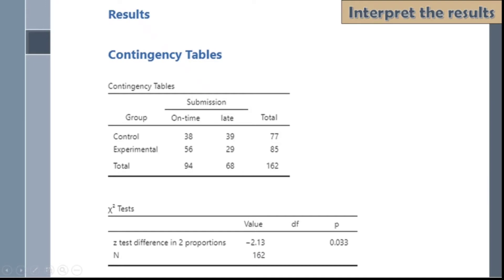When it comes to interpretation of results, these are the parts that you have to pay attention to. Let's look first at the contingency table. If we compare the timeliness of submission of worksheets between the control and experimental groups, out of 77 students in the control group who were not exposed to any intervention, only 38 submitted on time, and 39 — more than half — submitted late.